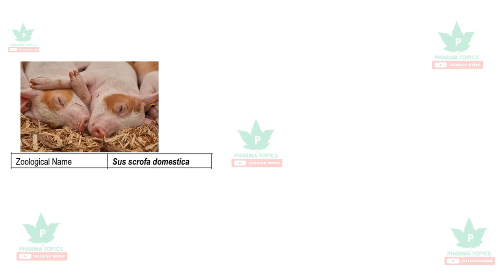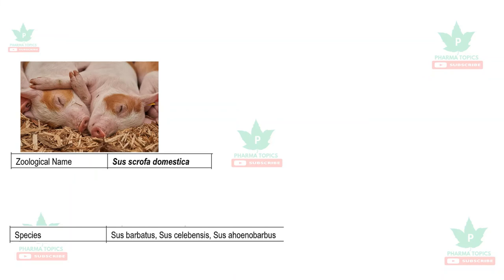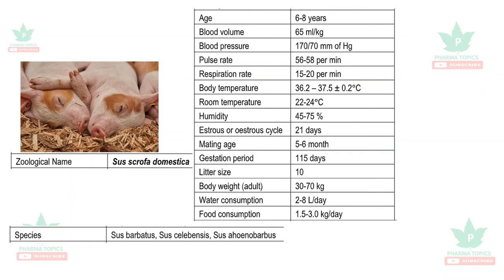Other pig species include Sus barbatus, Sus celebensis, and Sus ahoenobarbus. The lifespan is six to eight years, body temperature is near to humans, and the estrus cycle lasts 21 days. Gestation period is 115 days, and litter size is 10 per pregnancy. Body weight is 37 to 70 kg, water consumption is two to eight liters per day, and food consumption is 1.5 to 3 kg per day. The diet requires both vegetable and non-vegetable food.